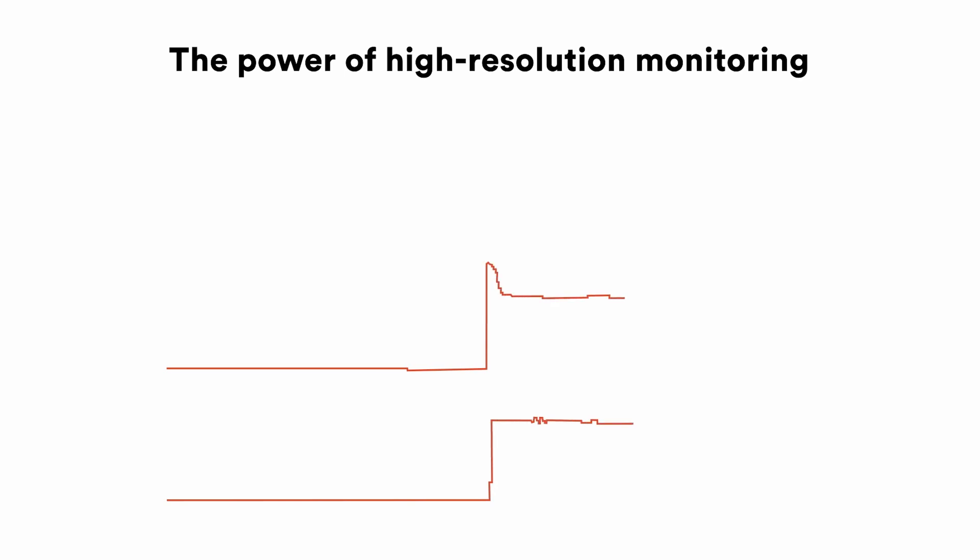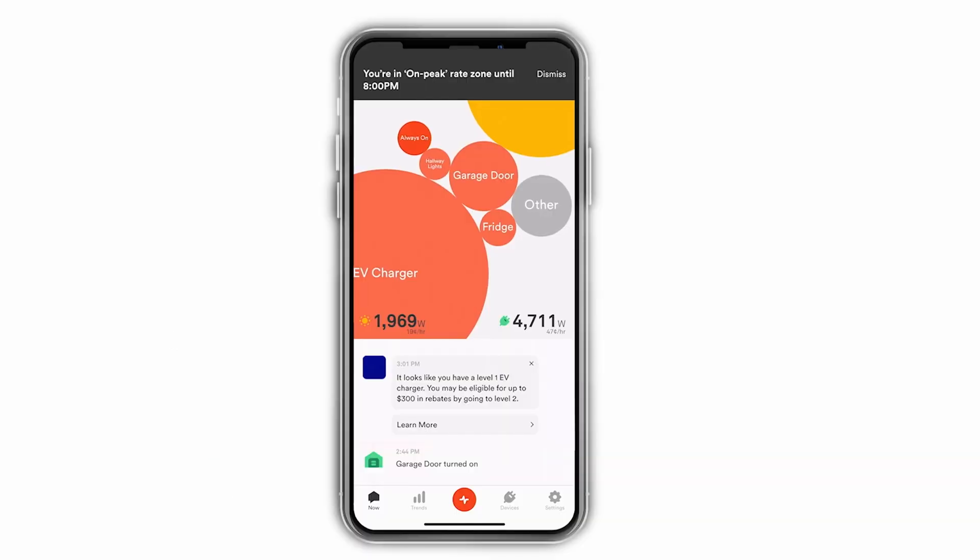We use high-resolution energy monitoring and machine learning algorithms to identify devices in the home and provide detailed insight on how they are being used. Through the SENSE app, customers get information in real-time, helping them understand what's happening right now.